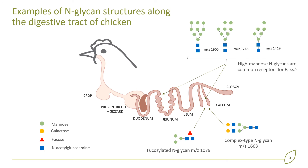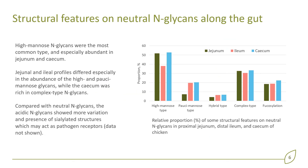This slide gives some examples of N-glycan structures which were found along the digestive tract of chicken. As the graph on the right-hand side shows, the high mannose N-glycans were the most common type in these samples.